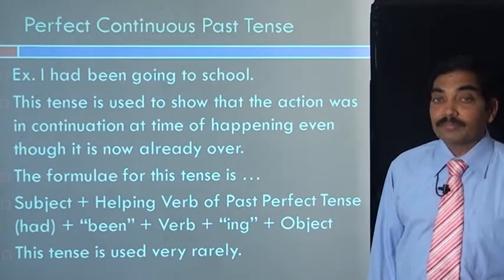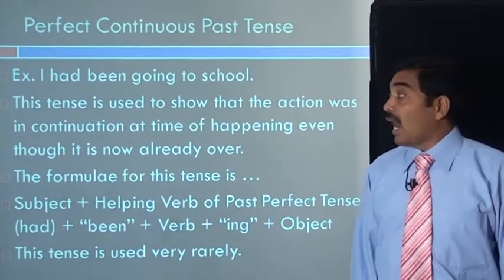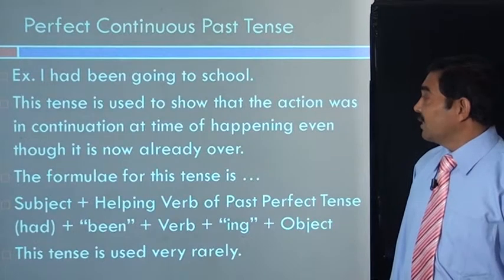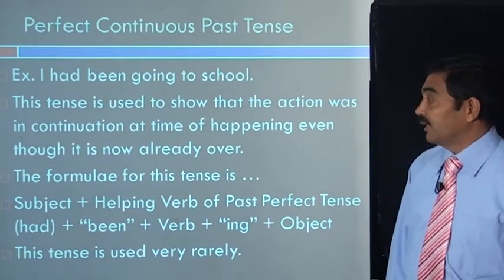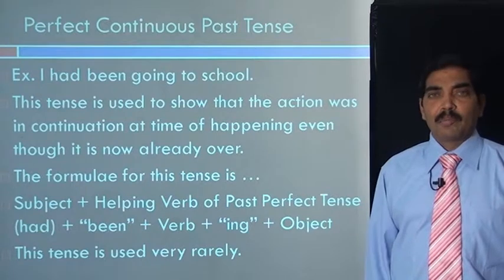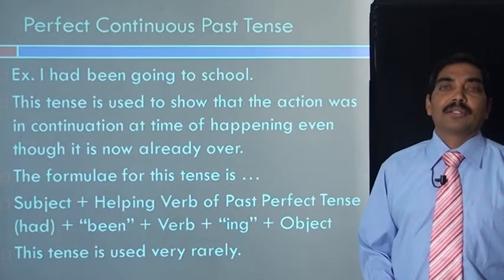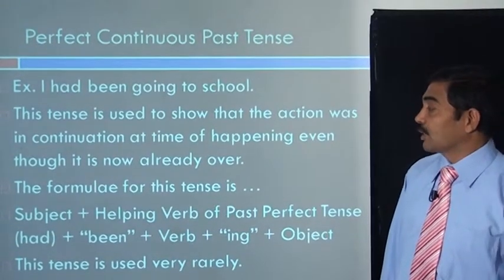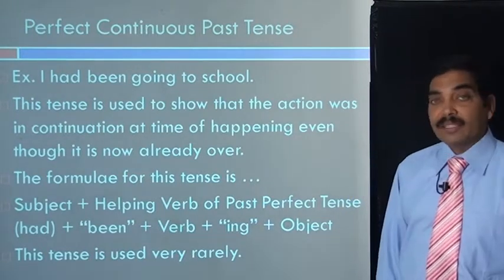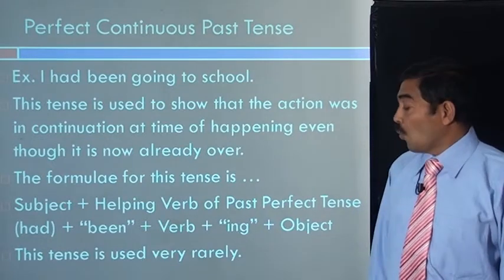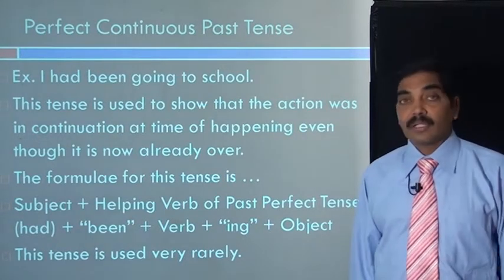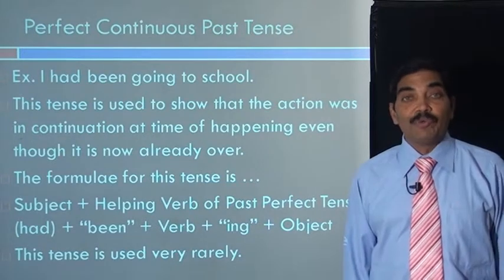Let us go to the eighth form: perfect continuous past tense. Example: I had been going to school. This tense is used to show that the action was in continuation at the time of happening, even though it is now already over. The action is over, but when we are talking of the action, the action was going on. The formula is subject plus had, plus been, plus verb go, plus ing, plus object to school. Remember, this tense is also used very rarely.